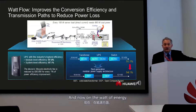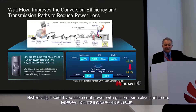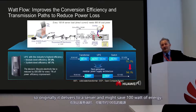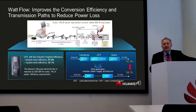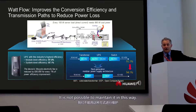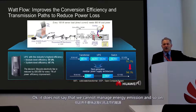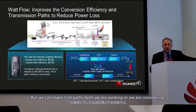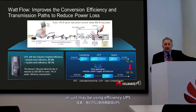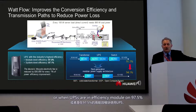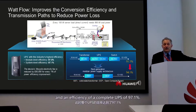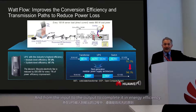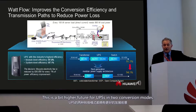How can we reduce energy waste? Historically, starting from grid power through transmission lines, we generate 800 Watts but only 100 Watts arrives at the server — all the rest is lost. In a data center we can address the last part of the chain by using a high-efficiency UPS with a module efficiency of 97.5% and a complete UPS efficiency of 97.1% in dual conversion mode.